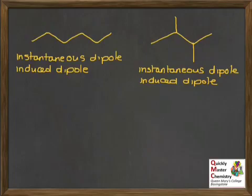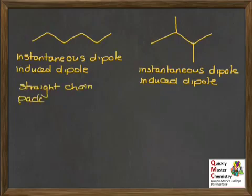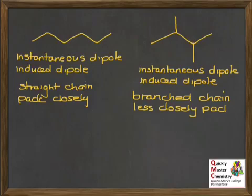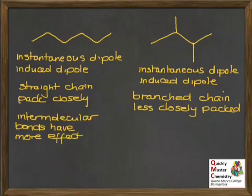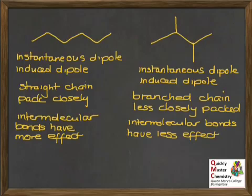This seems to throw a bit of a spanner in the works. We can't simply comment that one type of intermolecular bonding is stronger or weaker than the other. So we need to remember that there are factors that affect the strength of intermolecular bonds. Looking at the molecule on the left, we see that it's a straight chain molecule, which allows the molecules to pack closely. The one on the right is a branched molecule, and so the packing won't be as close between the molecules. This has an effect on the intermolecular bonds: for the hexane, the intermolecular bonds will have more effect because the molecules are closer together. For the branched molecule on the right, the intermolecular bonds will have less effect because the molecules can't pack as closely.